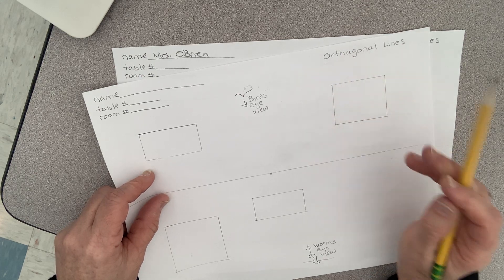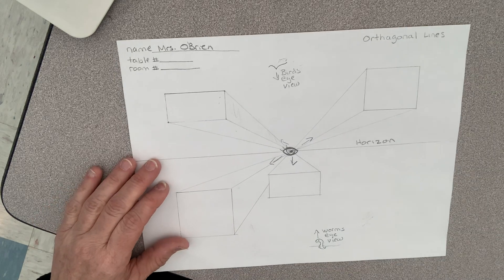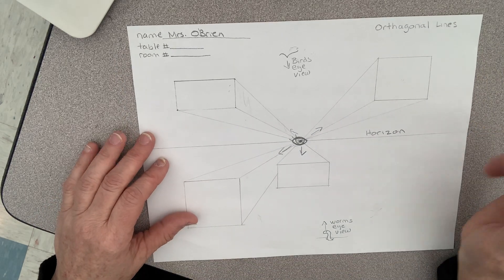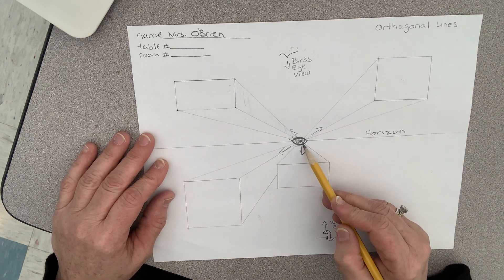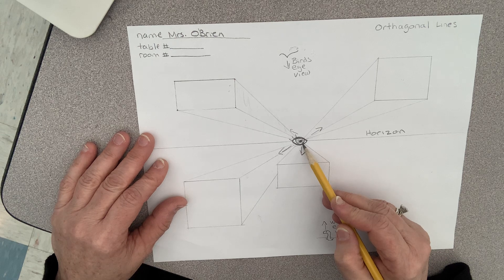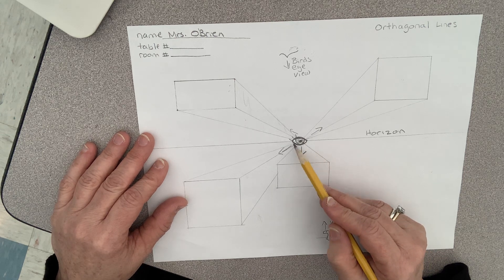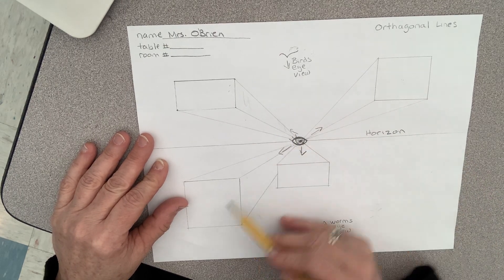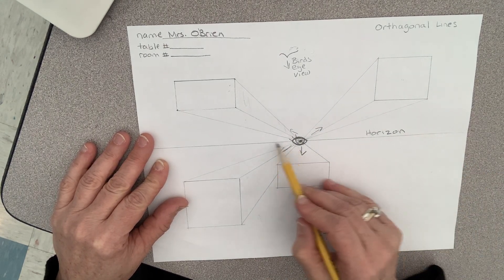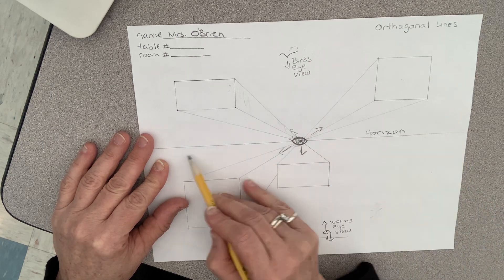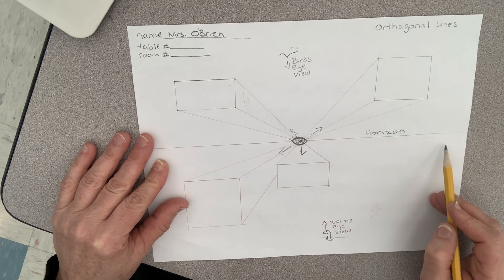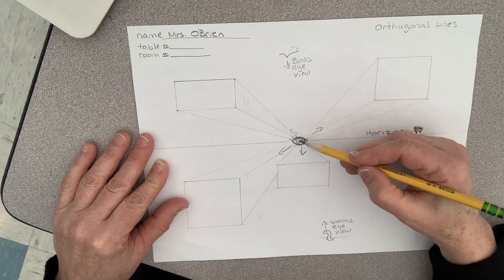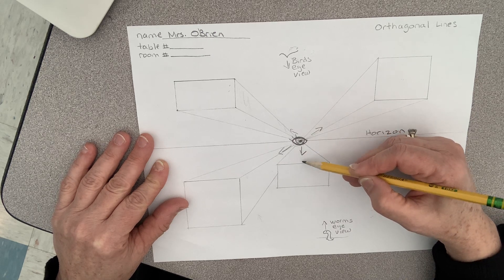Orthogonal lines: O-R-T-H-O-G-O-N-A-L. Now I drew on mine, you're not going to do this on yours. I drew an I because this is where the person is looking from to see these boxes looking like this. If you're right here, this is the horizon line, so that's eye level.